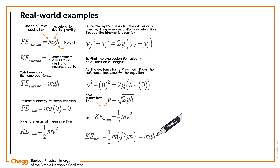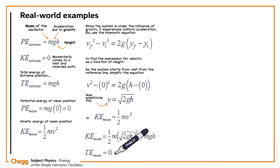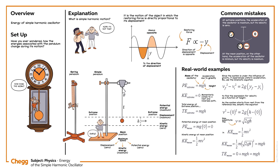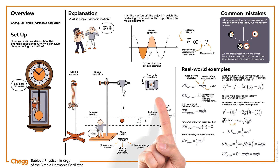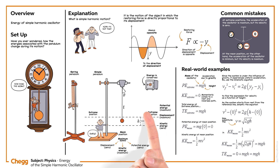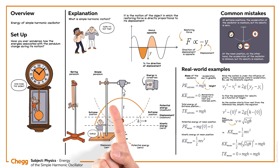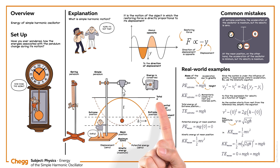The total energy at the mean position is TE_mean = 0 + mgh = mgh. From this, it is understood that the total energy of the simple harmonic oscillator is the same at both the extreme and mean positions, meaning energy is conserved for the simple harmonic oscillator. In other words, the potential energy at the mean position is zero and maximum at the extreme position. Similarly, the kinetic energy at the mean position is maximum and zero at the extreme positions. But the total energy of the simple harmonic oscillator is the same everywhere along its path.